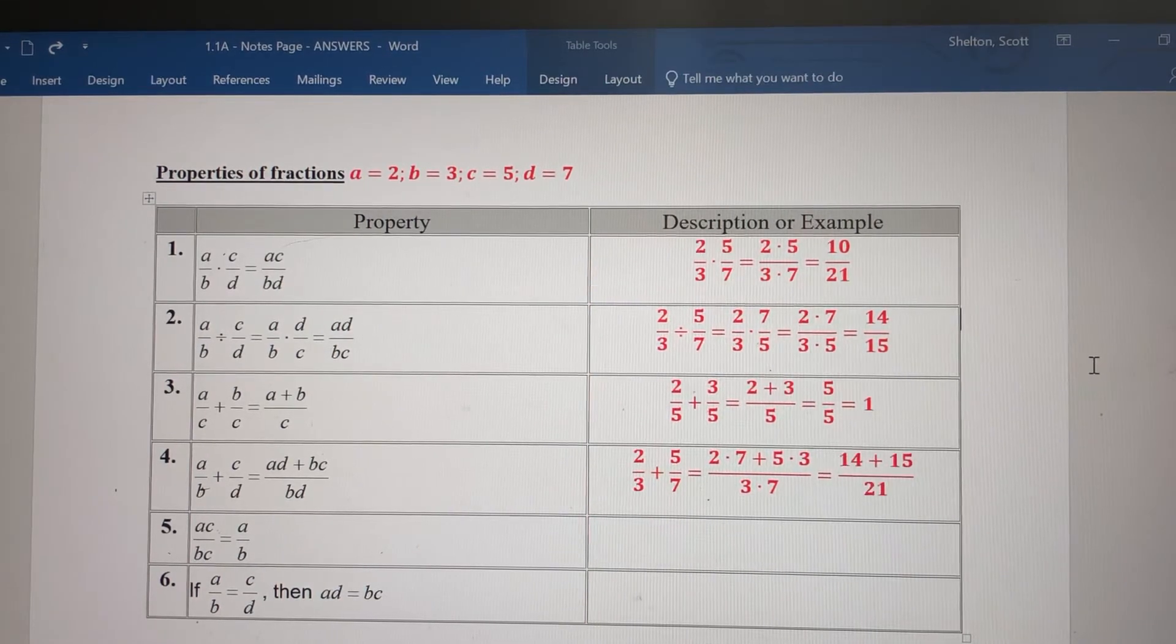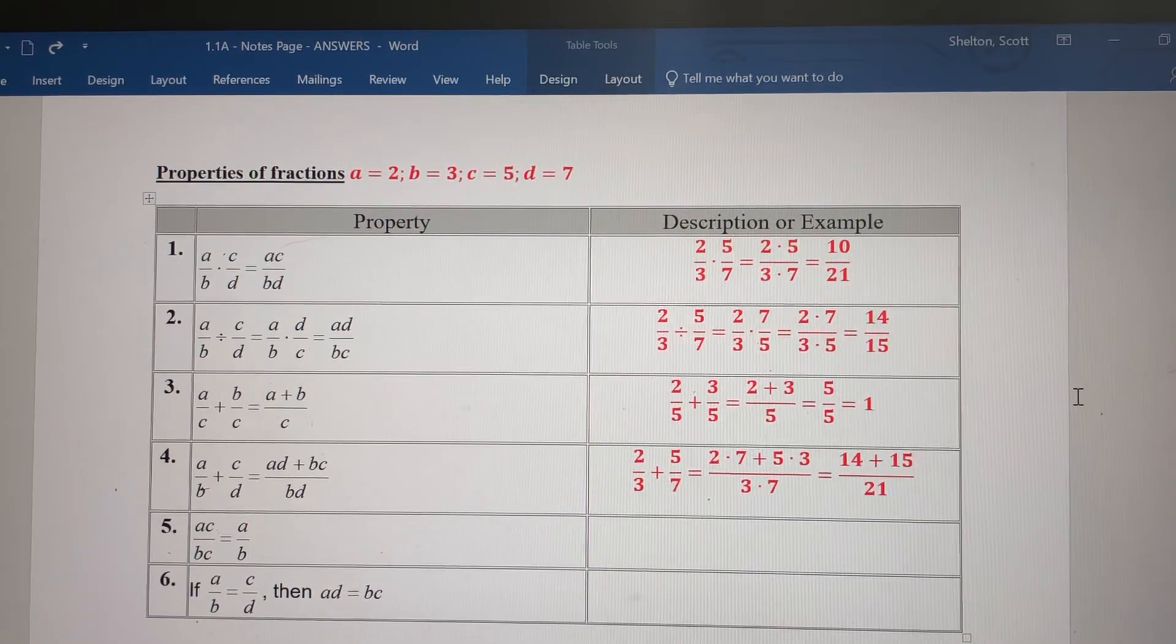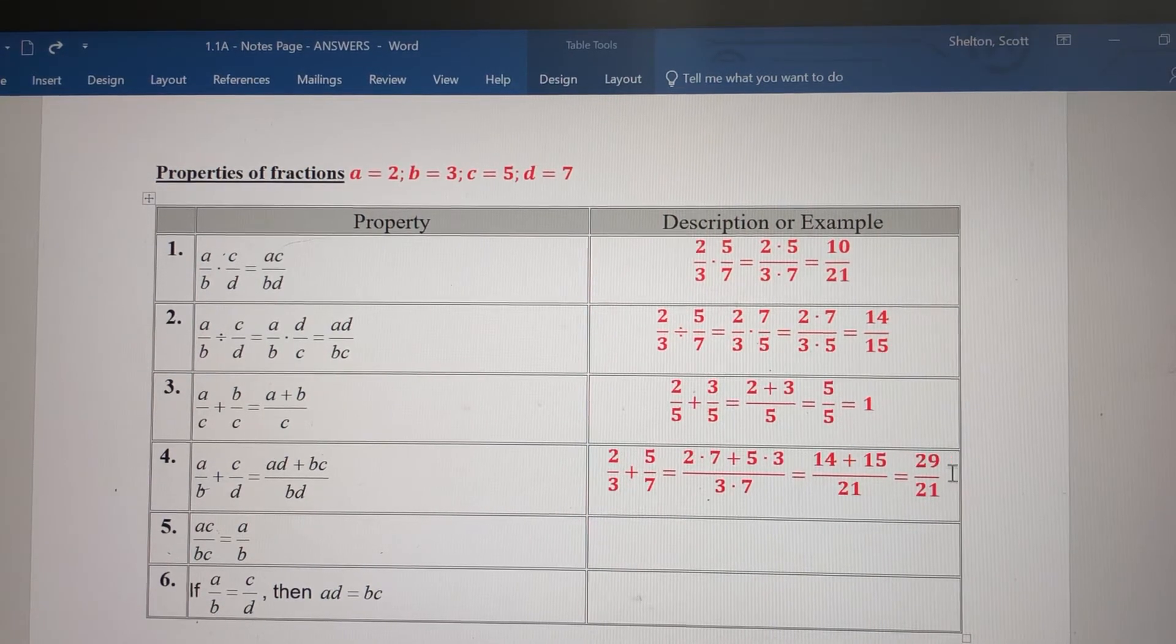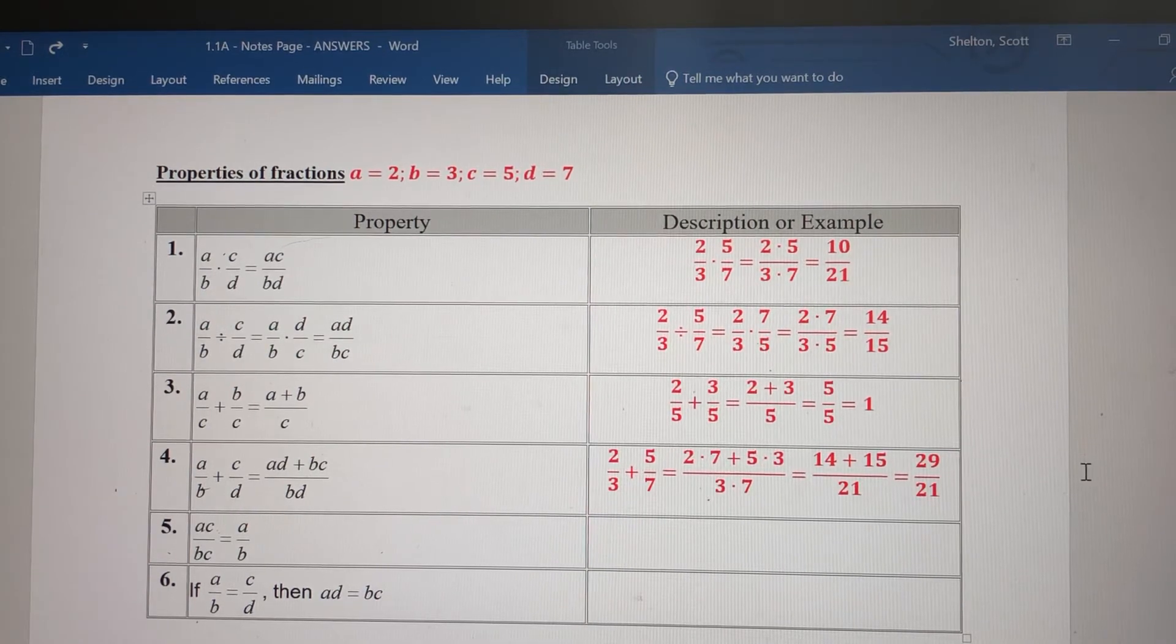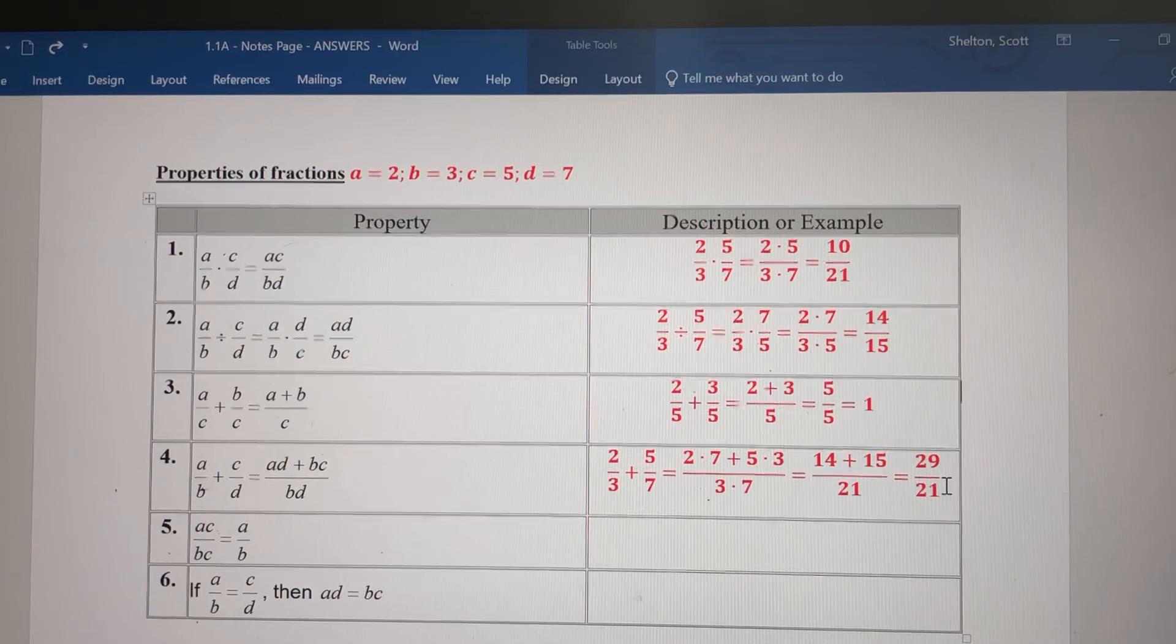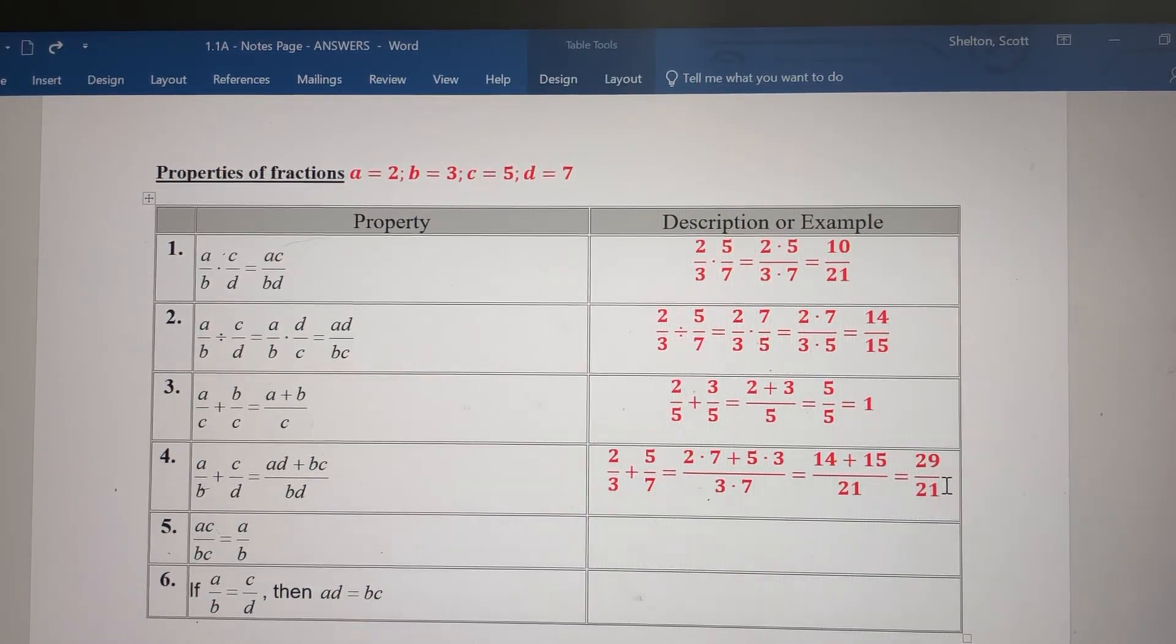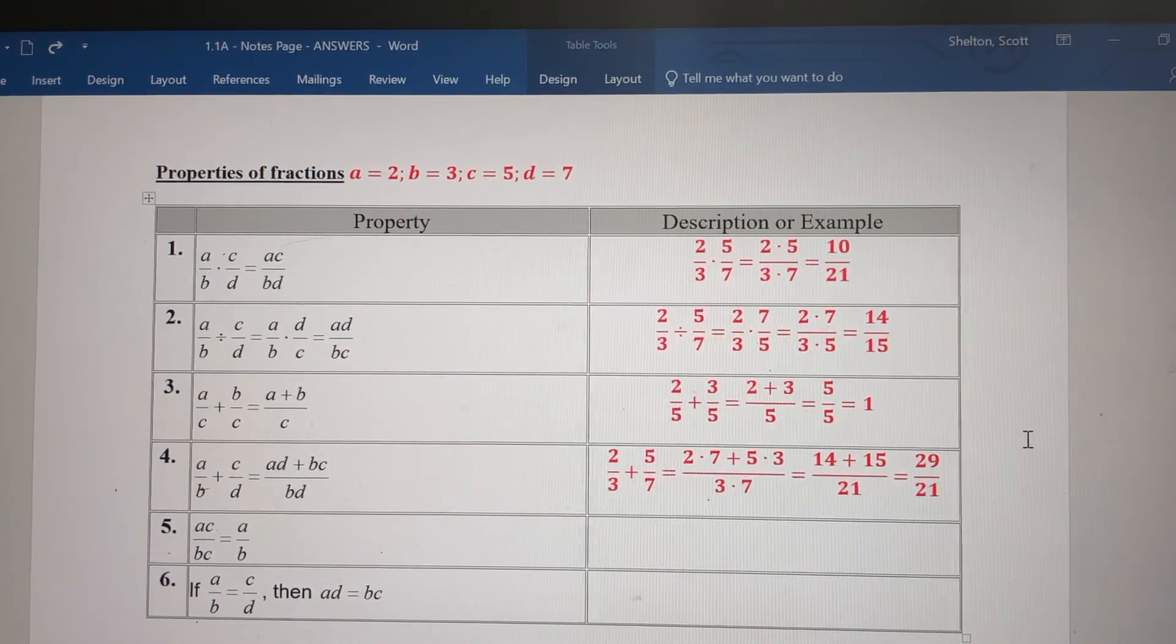That gives 14 plus 15 over 21. Simplify the numerator: 29/21. 29 is a prime number, so it doesn't have common factors with anything. That's the answer. Leave your answers as improper fractions - that will be beneficial later on. You need to know how to make mixed numbers, but in higher-level math, improper fractions are better.